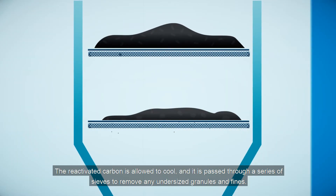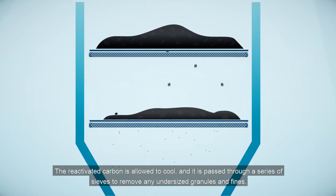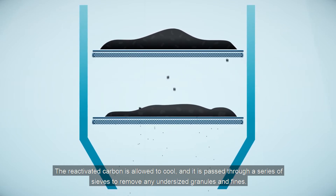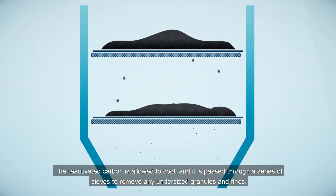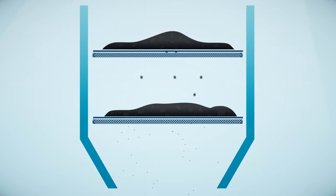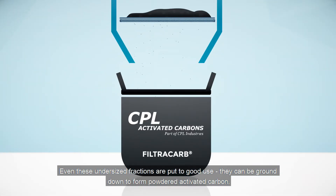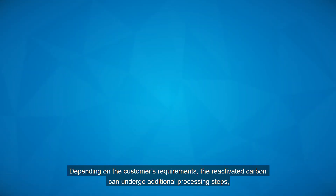The reactivated carbon is allowed to cool and is passed through a series of sieves to remove any undersized granules and fines. Even these undersized fractions are put to good use — they can be ground down to form powdered activated carbon.